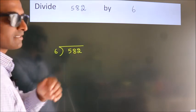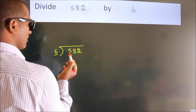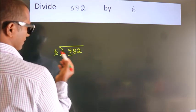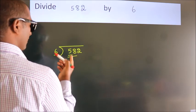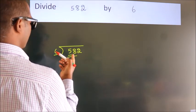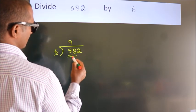Next, here we have 5, here 6. 5 is smaller than 6, so we should take two numbers, 58. A number close to 58 in the 6 table is 6 nines, 54.